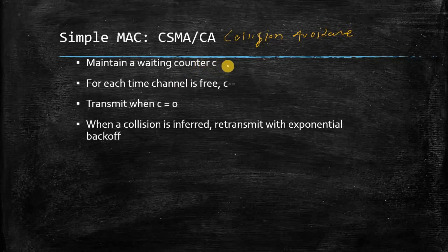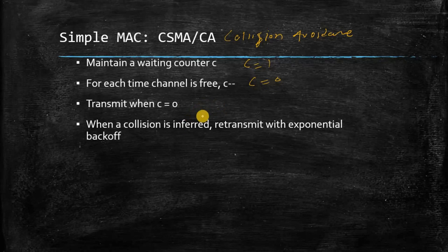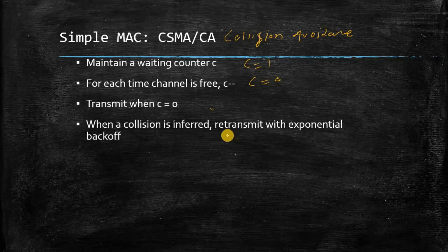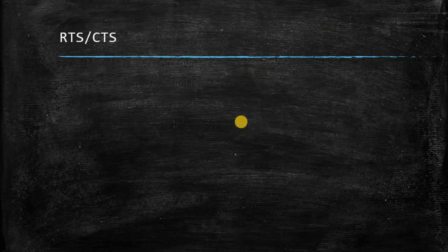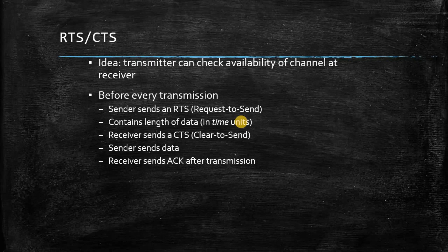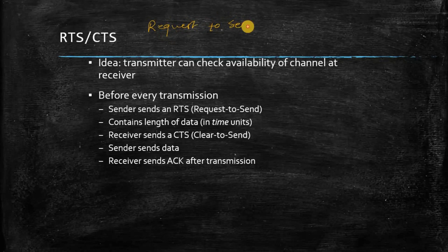In CSMA/CA, a waiting counter C is maintained, for example set to 1. For each time slot the channel is free, the counter is decremented. When the counter reaches 0, the medium is considered idle and data is sent over the channel. When a collision is inferred, the sender retransmits with exponential backoff — the timer is set to an exponentially increasing time. The working is understood through two messages: RTS (Request to Send) and CTS (Clear to Send).